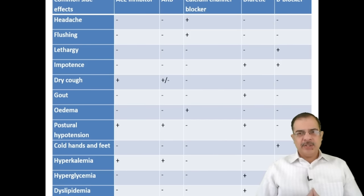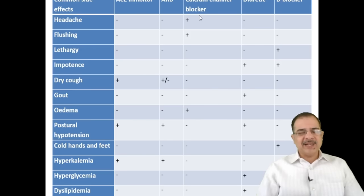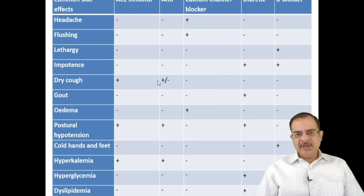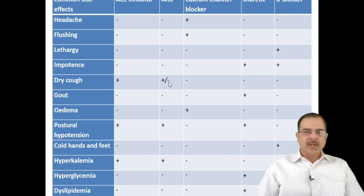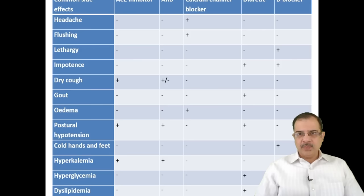Common side effects to inform patients about: calcium channel blockers can cause headache, flushing, and pedal edema — reassure the patient that ankle edema is a side effect of the CCB and does not indicate kidney or heart failure. ACE inhibitors can cause a dry, irritating cough — if this occurs, switch to an ARB, which has a lower chance of causing this side effect. Postural hypotension is common with alpha blockers. Diuretics can raise blood glucose levels, so caution is needed in diabetic patients.